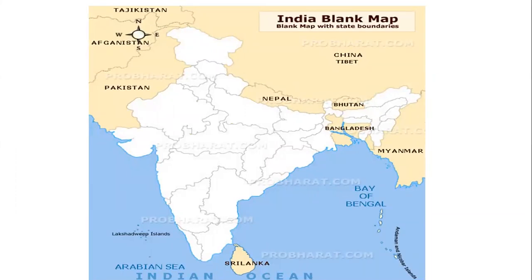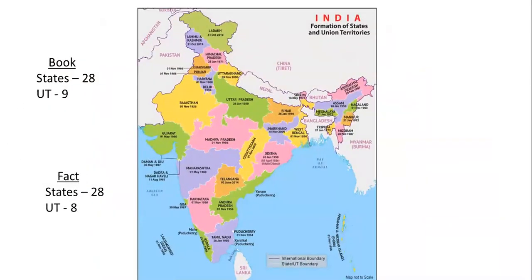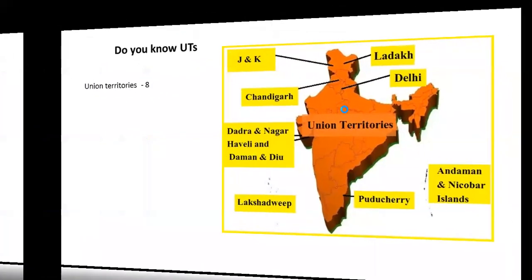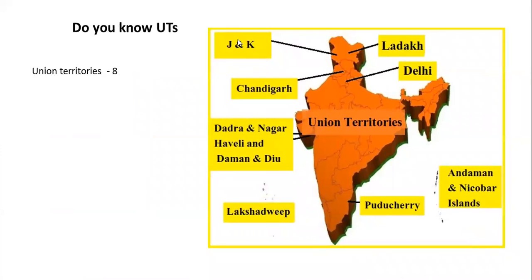This is a map showing the neighboring countries of India. How many states and union territories are there? As of now, as a fact: there are 28 states and eight union territories. But our book is still the old edition — it follows 28 states and nine union territories. Jammu and Kashmir has been added as union territories. The current eight union territories are: Jammu and Kashmir, Ladakh, Delhi, Chandigarh, Dadra and Nagar Haveli and Daman and Diu (counted as one), Lakshadweep, Puducherry, and Andaman and Nicobar. This is important for NTSC even if it's not in the book.